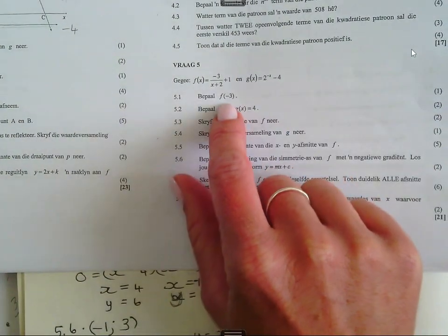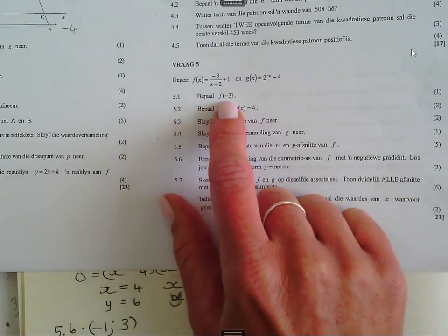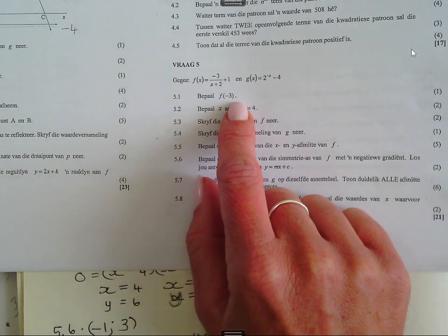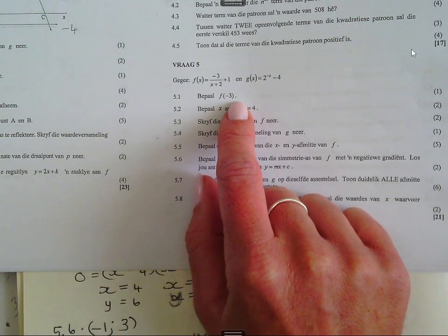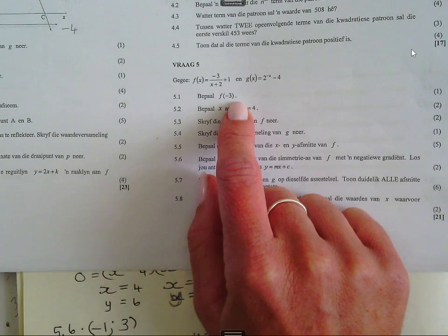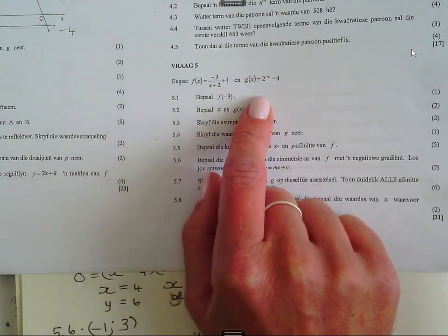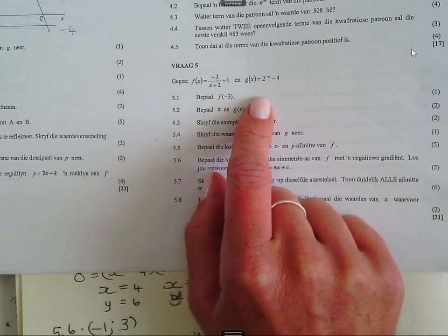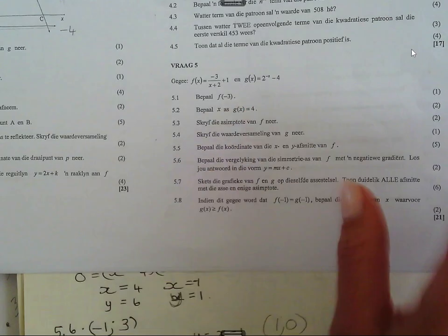En hulle het alles in die vergelyking vir jou gegeef. Terwijl ons net gau kyk na hom. Ek het dit al gesê, maar kyk gau na 5.1 waar hulle sê bepaal f van minus 3. Ek het gesê die minus 3 is nou in die plaak van x, want ons ken hom ons as f van x. So as dit f van minus 3 is, beteken dit dit moet in die plaak van x moet jy minus 3 sê. As hulle gesê het bepaal f van x gelijk aan minus 3, dan sy jy y minus 3 gemak het en die som opgeloo sê. En daar hulle dit, ek het dit al gesê maar ek sê dit net weer.